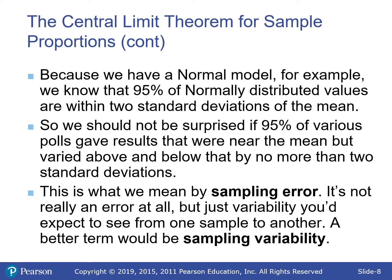That is what's called sampling error — but notice, it's not actually an error. It's just variability. Every sample is not going to be the same. It's called sampling variability. We see it in newspapers: '53% of people think this, plus or minus 3%.' That plus or minus 3% is the sampling variability — they expect the true value to be in that range.